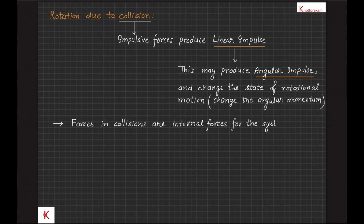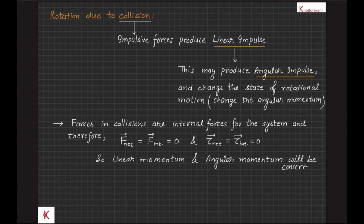Also, forces in collision are internal forces for the system and if external forces are comparatively very weak, then net force on the system is net internal force that will be zero. Also, net torque is equal to net internal torque which is zero. Linear momentum and angular momentum will be conserved.